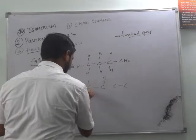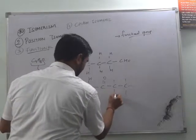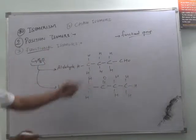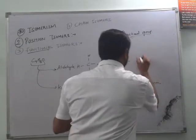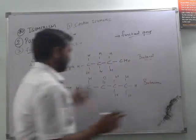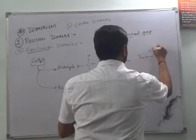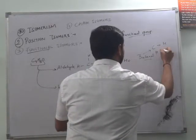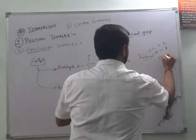Now if we check C4H8O — this is the structure for butanone. You can check by counting the number of elements used in this. In butanone, carbon is 4, hydrogen is 8, and oxygen is 1.